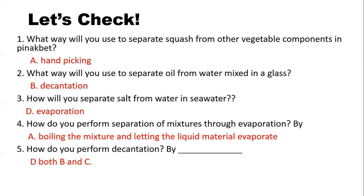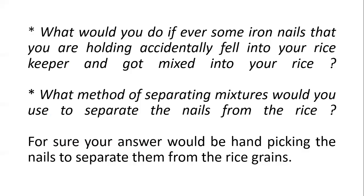Now time for you to count the number of check marks that you got. 5? That's amazing. I hope you will be doing great in our new lesson. So for our new lesson, let me ask you: what would you do if some iron nails you were holding accidentally fell into your rice keeper and got mixed into your rice? What method of separating mixtures would you use to separate the nails from the rice?